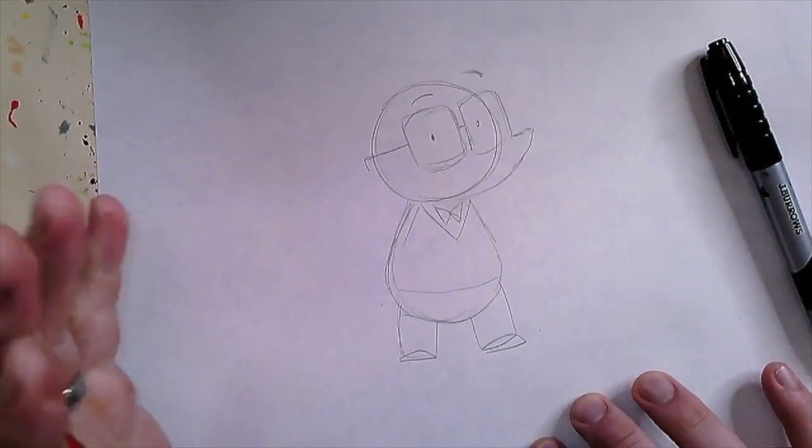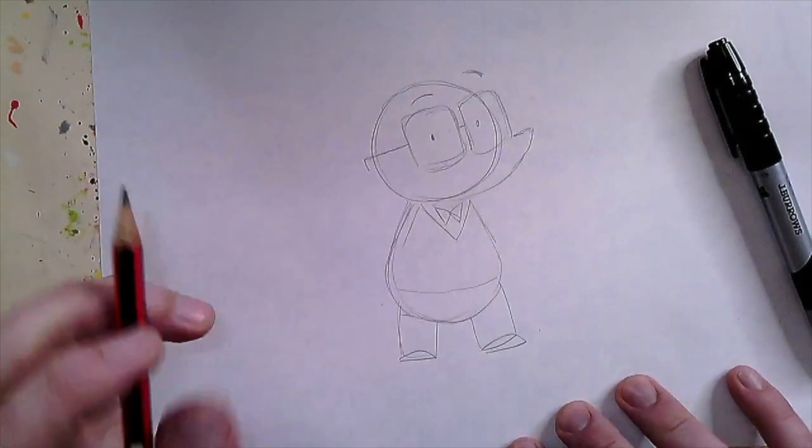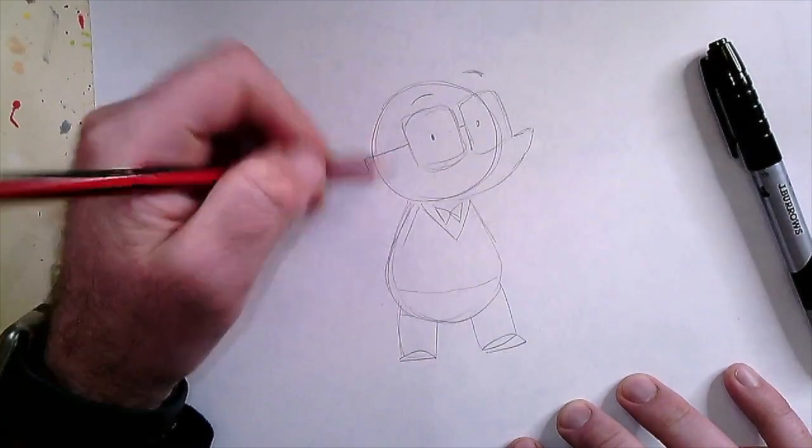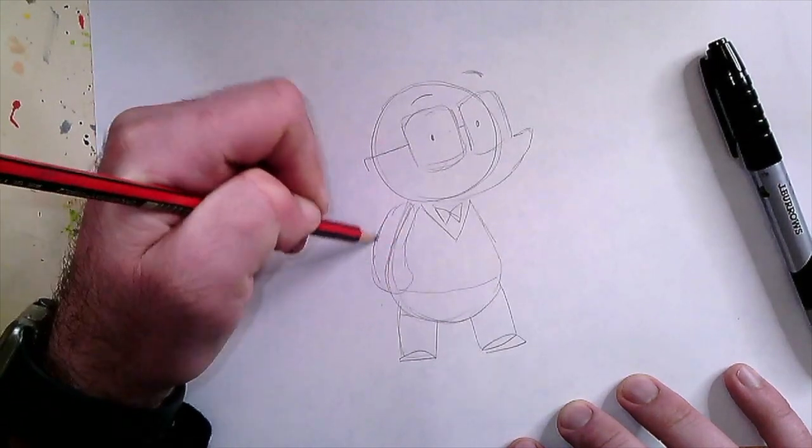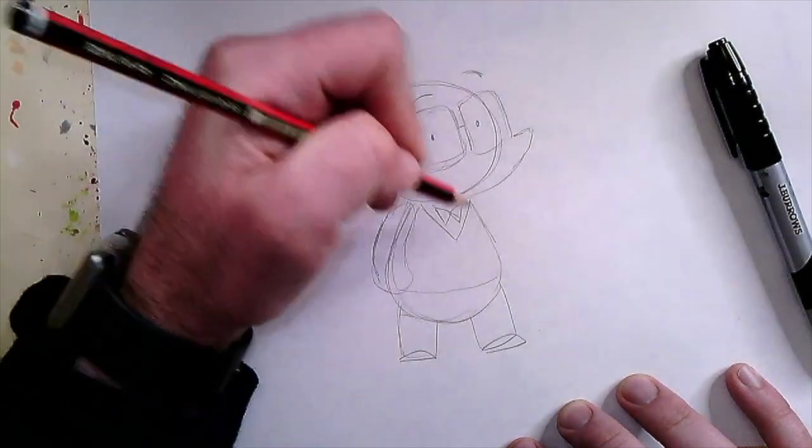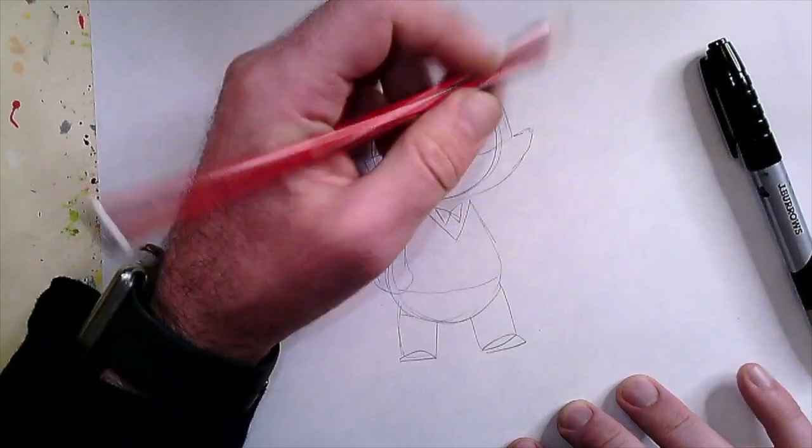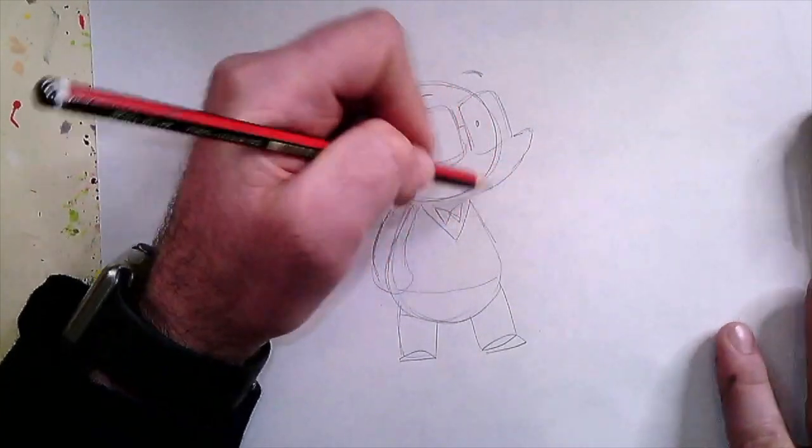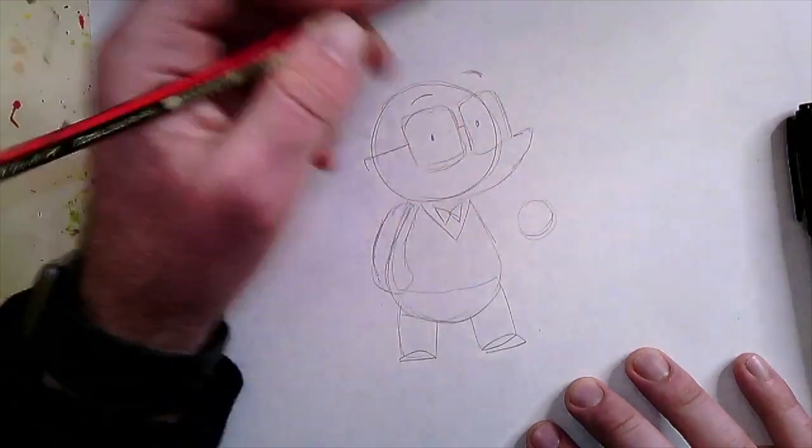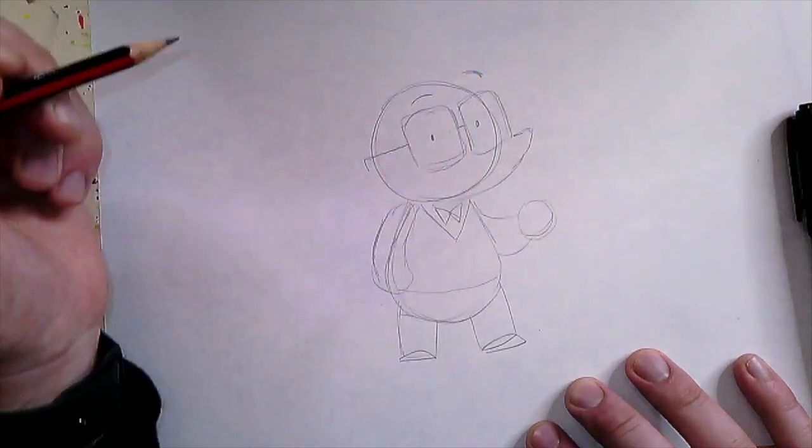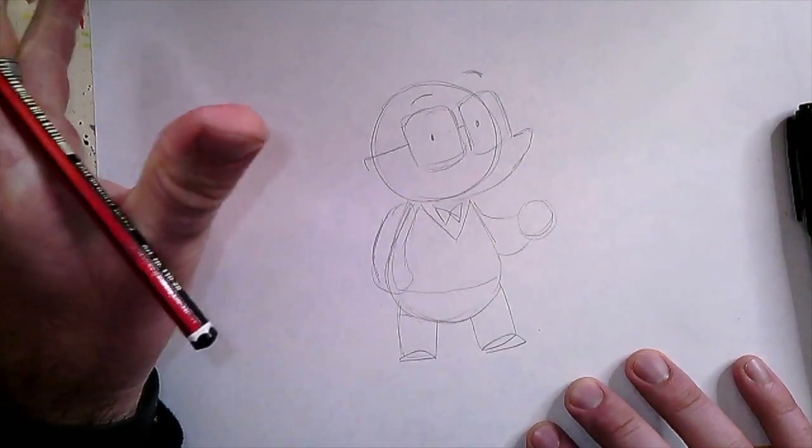We're going to put a curly sausage coming down this side for one of his arms. Actually, I might draw his hand first in space. Sometimes it's easier to draw the hand where you want it to go and then you can draw the arm to join onto it.